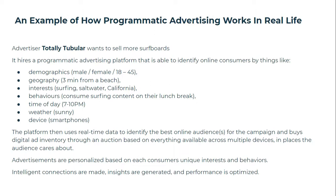This is one set of online consumers who are potential customers. The platform will seek out these specific audiences and show ads to them. There are millions of people who match one or all of these criteria. The platform takes its time to understand the audiences and then in real time shows the ad exactly when they're surfing for that content. Advertisements are personalized based on each customer's unique interests and behavior. I wouldn't be shown a Totally Tubular ad — I'd be shown a Neutrogena sunscreen ad, because that makes more sense to me.